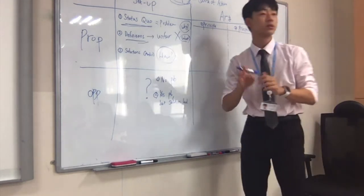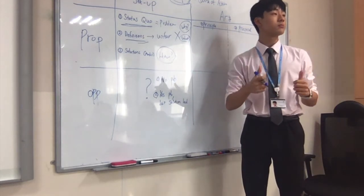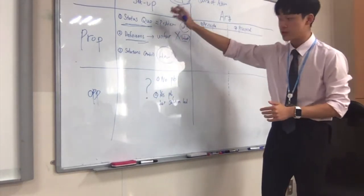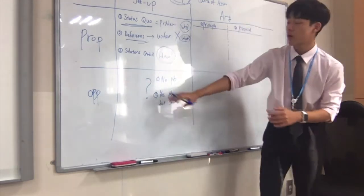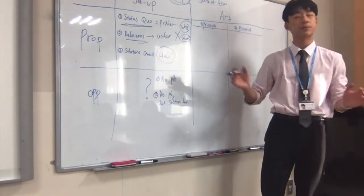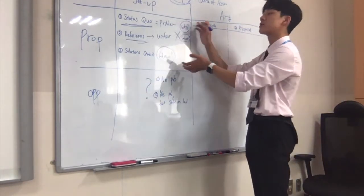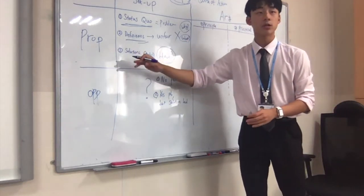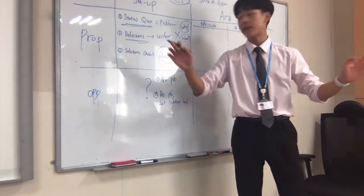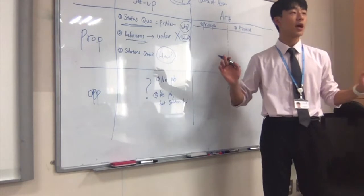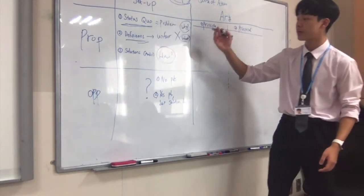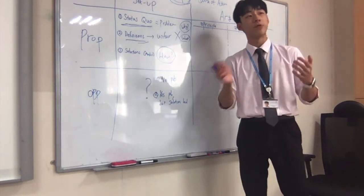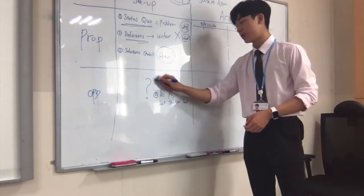Now let's go to opposition setup and talk about how opposition could respond to these three things. Unlike proposition, there's a lot of flexibility in the opposition case. You can twist many things from proposition's case. The first thing you could do is say that there's no problem in the first place. You see politicians saying climate change is not happening — that's an example of this strategy. If the problem doesn't exist, then the solution is also not really important, because you can't have a solution if you don't have a problem.